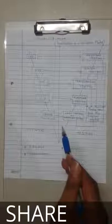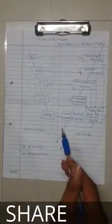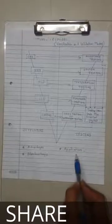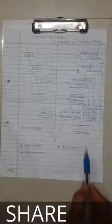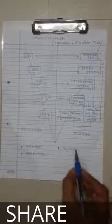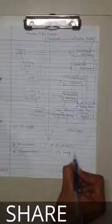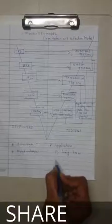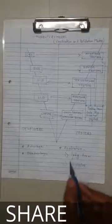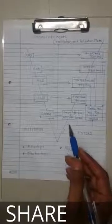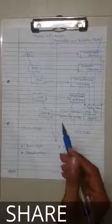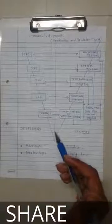The drawbacks of the V&V model are: initial investment is more because the testing team is needed from the very beginning, and there is more documentation work due to test plans, test cases, and other documents. The V&V model is applied for long-term projects and for complex applications.